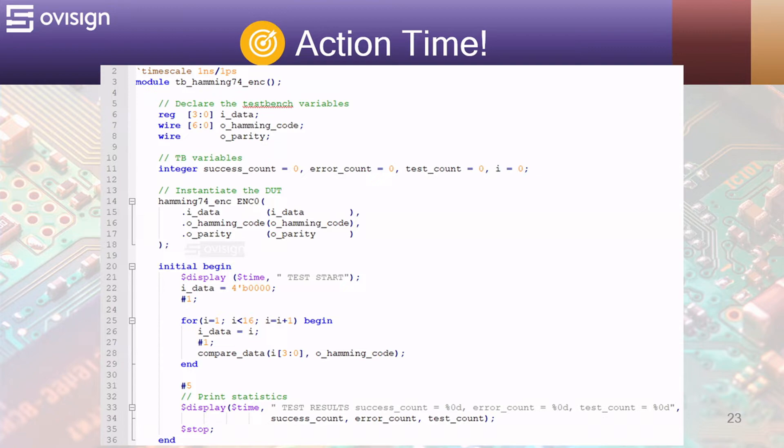Let's now implement a self-checking test bench for our Hamming encoder. At line 2 we declare a timescale of 1 nanosecond with a precision of 1 picosecond. At line 6 we declare the test bench variables that are going to be connected with our DUT which is the Hamming encoder. We use reg for inputs and wire for the outputs. At line 11 we declare the test bench variables that are going to be used by the self-checking procedure. At line 14 we instantiate the DUT and connect it with our test bench variables.